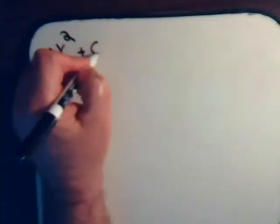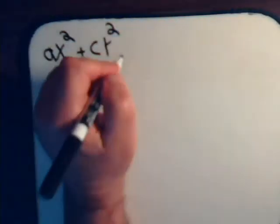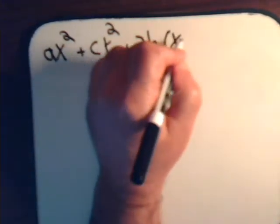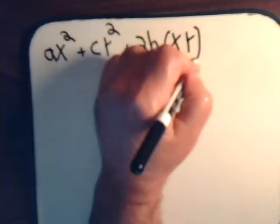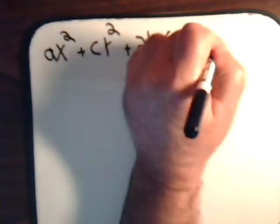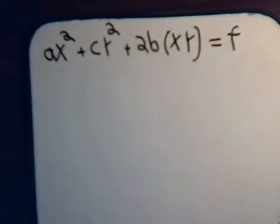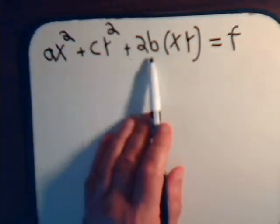Suppose we had an equation that in general form looked like this. Say we had some coefficient times x squared plus some coefficient times y squared, and then we have a coefficient of a cross term xy. For the cross term, whatever coefficient we have, it's multiplied by 2.